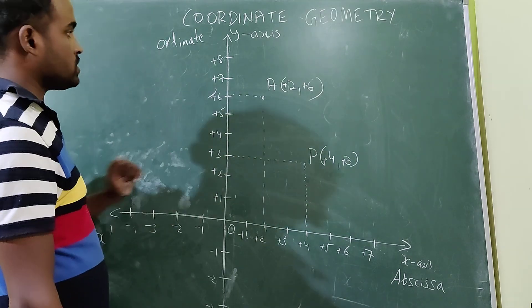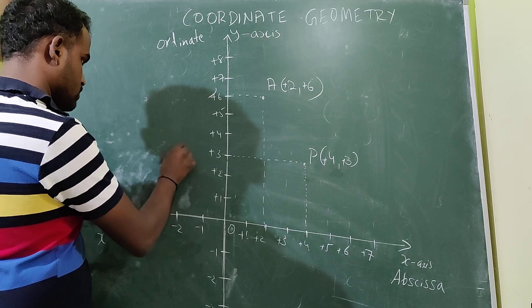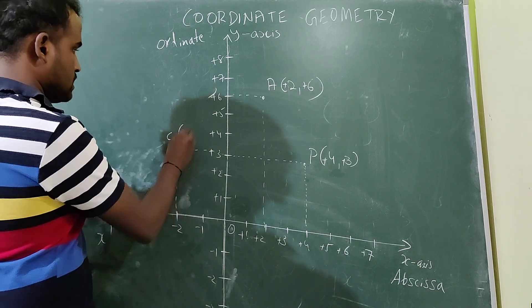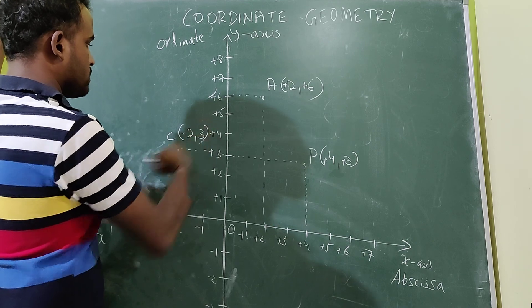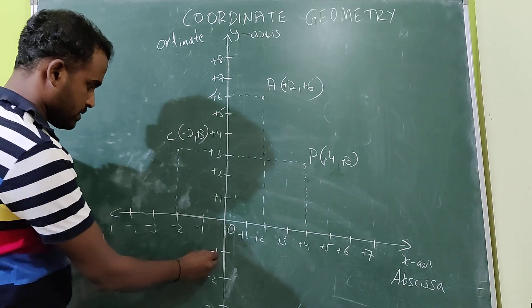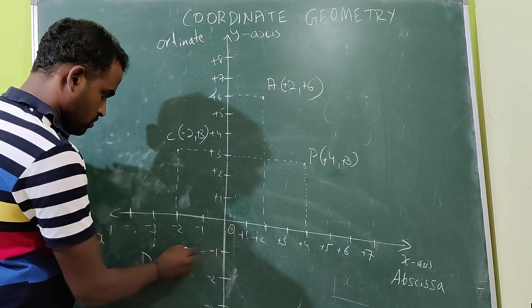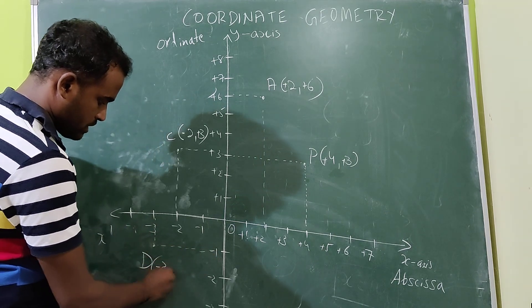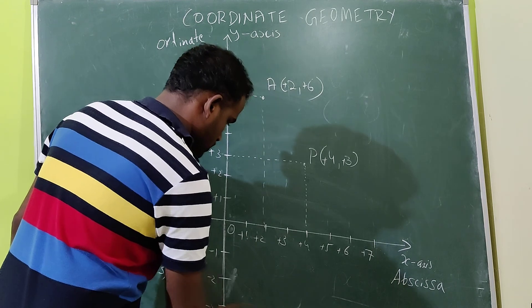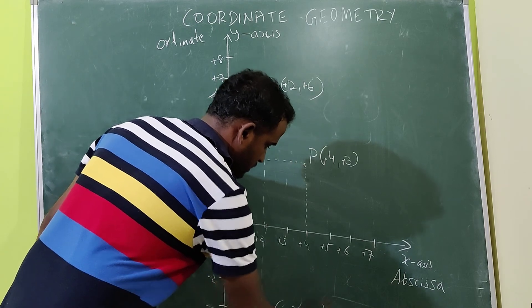Let us move to quadrant 2. Here x equals -2 and y equals +3: minus 2 and plus 3. Next, in the fourth quadrant, consider a point D. Always write x first: x is -3, y equals -1. Here consider one point Q: (+2, -3).